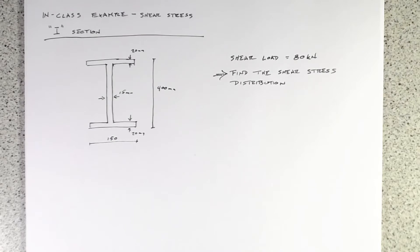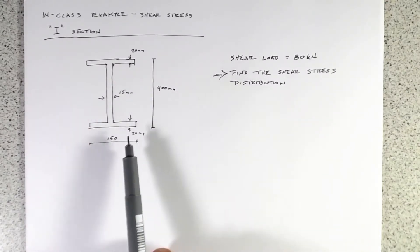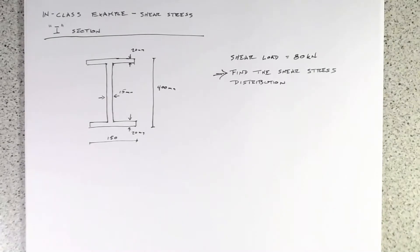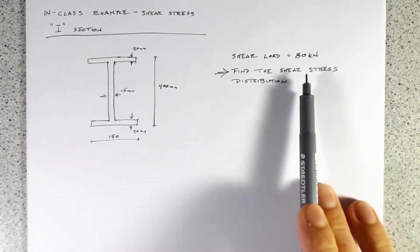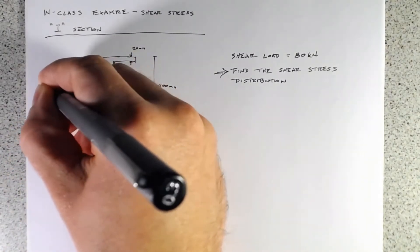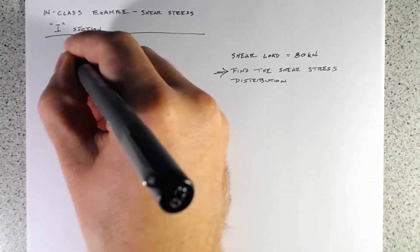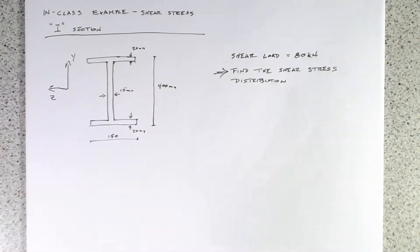Here's our section. It is a doubly symmetric I-section, 150 millimeters wide and 400 millimeters tall. The flanges are both 20 millimeters thick, and the web is 15 millimeters thick. The applied shear load at this section is 80 kilonewtons, and we need to find the shear stress distribution across the height. The vertical coordinate is y and the horizontal one is z.